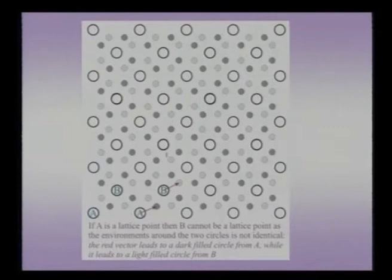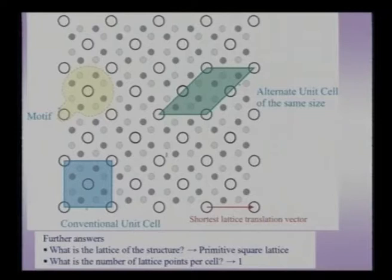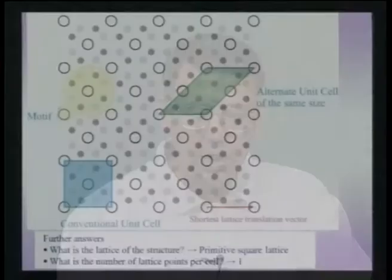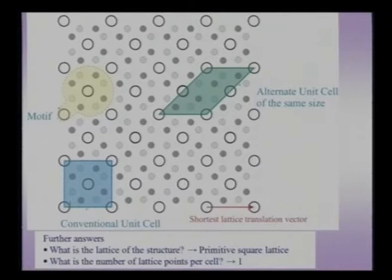Now let us overlay the unit cells, the shortest lattice translation vector, and the motif which generates this crystal. Joining the four corners made of A-type circles gives a blue unit cell, which also happens to be the smallest unit cell. An alternate unit cell is shown by the green outline, which is also the smallest size. I can calculate the area to confirm both have the same area. Each corner contributes one-fourth; the net contribution is one lattice point per cell — confirming it is the primitive unit cell.